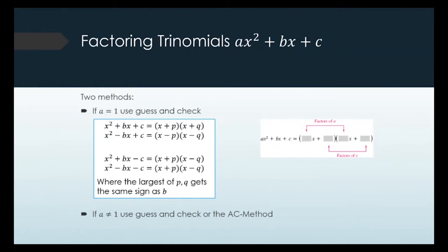There are essentially two different methods: guessing and checking, or the AC method. Guessing and checking is great if there's no number in front of the x squared term, because it's really easy. But if there's a number in front of the x squared term, you could get a lot of possibilities and choices when you're guessing and checking, and it's a lot harder and takes more time.